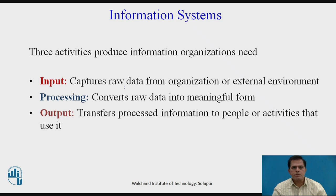Continuing with Information Systems, there are three activities that produce information organizations need from information systems. First, Input: captures raw data from the organization or from the external environment. Second, Processing: converts raw data into meaningful form. Third, Output: transfers processed information to people or activities that use it.